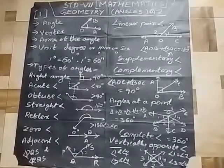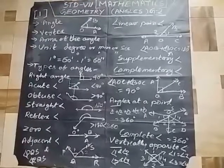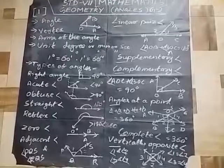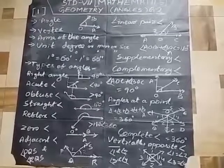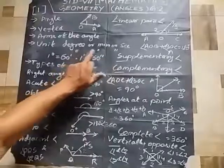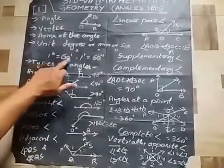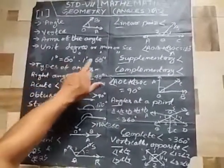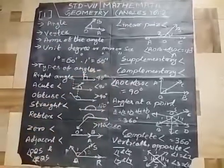An angle can be measured by degrees, minutes, or seconds. One degree is equal to 60 minutes, and one minute is equal to 60 seconds.